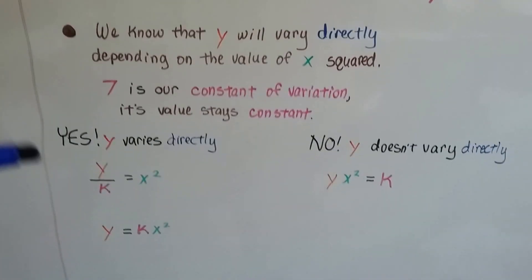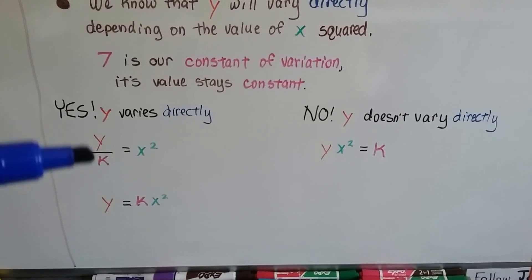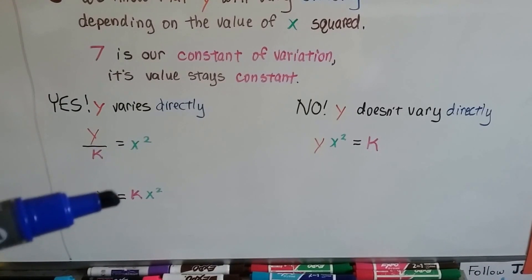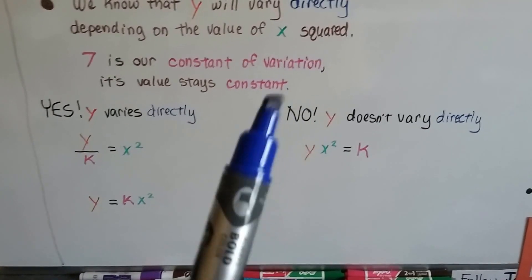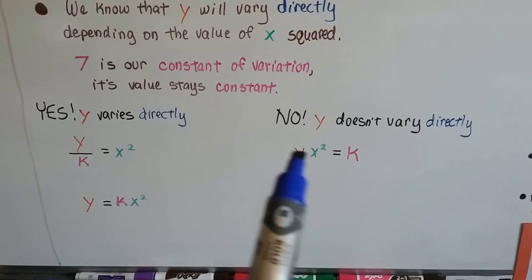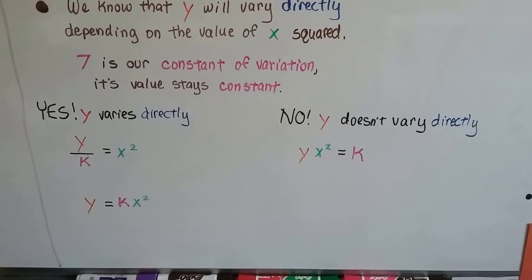So, in a nutshell, yes, y varies directly when it's written as y divided by k equals x squared, or y equals kx squared. But no, y doesn't vary directly if we multiply these two together set to equal the constant. That's the no-no.